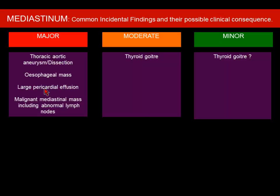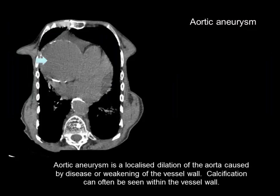If there is an esophageal mass or a large pericardial effusion, it is a major finding and you need to inform the clinical team immediately. For thyroid goiter, you can mention it in your report, but if it is causing pressure symptoms or there is mediastinal extension, it is better to mention those things which may cause problems during surgery. For aortic aneurysm — a localized dilatation of the aorta — you have to call the surgeon, but it depends on how large it is.